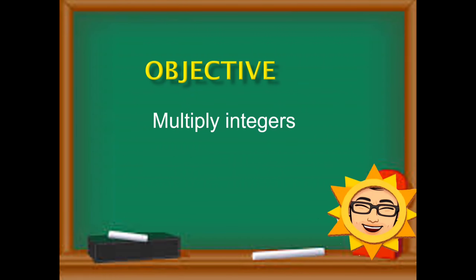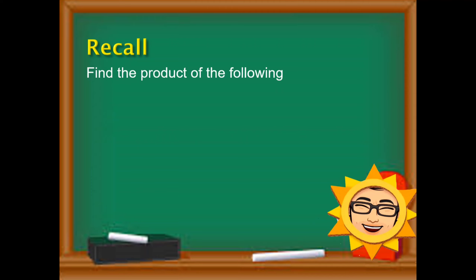So when we talk of multiplication of integers, kailangan familiar tayo obviously with the multiplication of whole numbers. So let us recall. Find the product of the following. So 5 times 3 — that's 15.